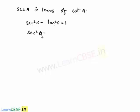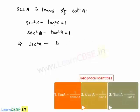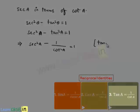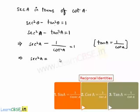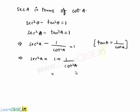We get secant squared a minus tan squared a equals 1, which implies secant squared a equals 1 plus tan squared a. Since tan a equals 1 by cot a, tan squared a equals 1 by cot squared a. That implies secant squared a equals 1 plus 1 by cot squared a. Now by taking LCM as cot squared a, we get the expression as cot squared a plus 1 by cot squared a.